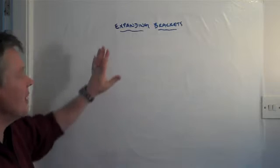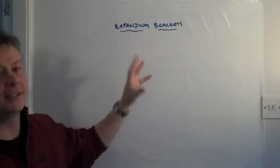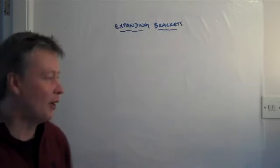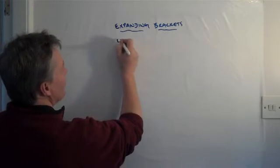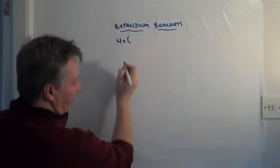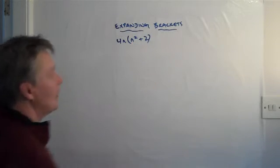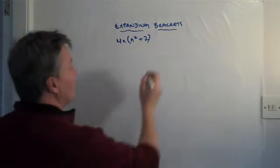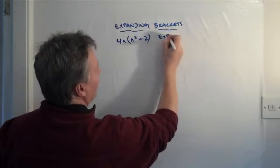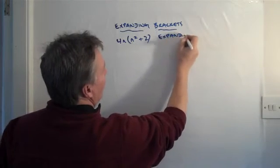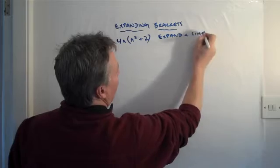And it will say something like expand and simplify. And it will give you something like this. It will say 4n brackets n squared plus 2. And the question will be expand and simplify.